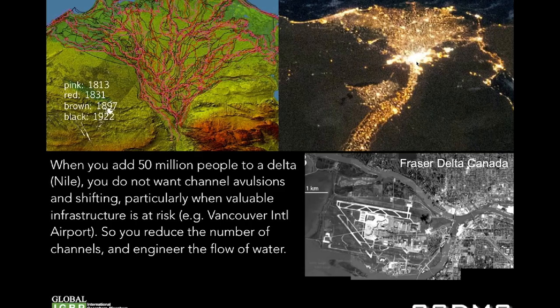The Nile is a classic example. Egypt's population is around 80 million people — about 50 million of the 80 million is on the Nile. When you look at channels mapped and geolocated on the Nile from 1813 to 1922, you see some shifting — that's how deltas work, they have channels that shift around and find the low spots. Eventually there's a flood, levees break, they find a low spot, and that becomes the new channel. But if you have 50 million people living on a delta, you certainly don't want channels to shift, so you do engineering things to stop them.